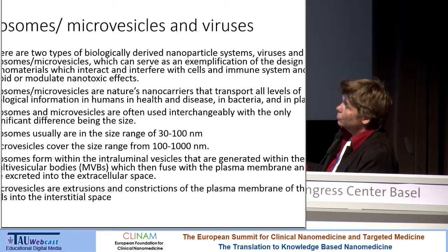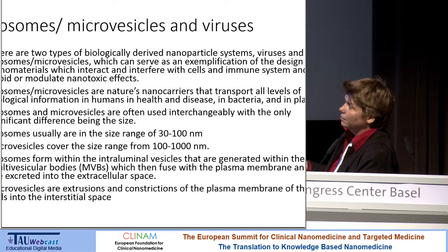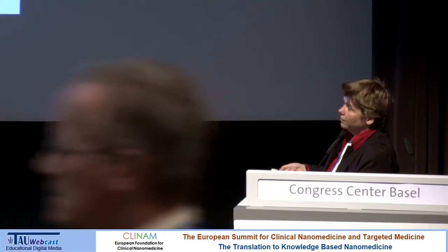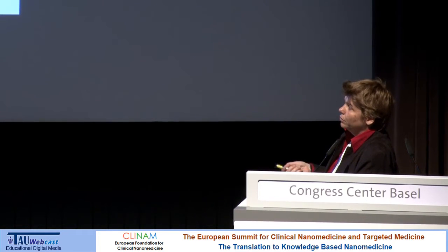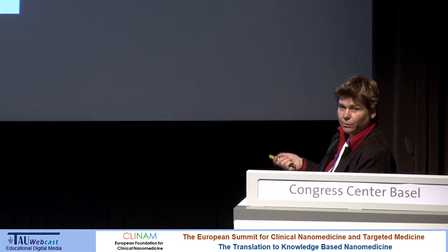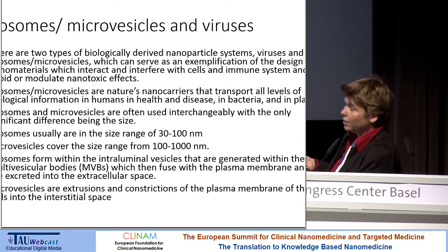The exosomes are produced as intraluminal vesicles inside the cells in multivesicular bodies, and these finally fuse with the plasma membrane and the vesicular structures are released. On the other hand, you have the microvesicles, and microvesicles are more or less extrusions from the plasma membrane. This is a very critical point to keep in mind when producing and thinking about using exosomes and microvesicles for treatment and as a drug delivery system.